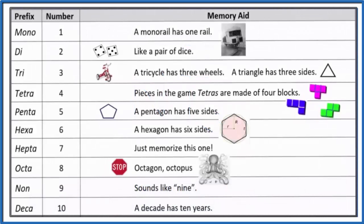If you need some help memorizing these prefixes, here's a table that will help you do that. This is Dr. B with the formula for nitrogen triiodide, NI3. Thanks for watching.